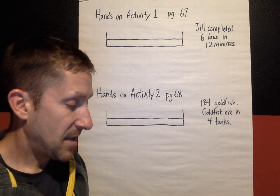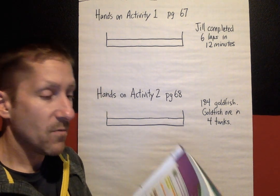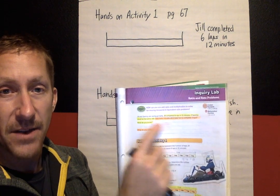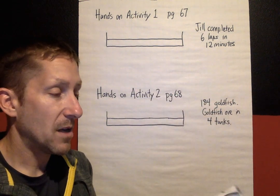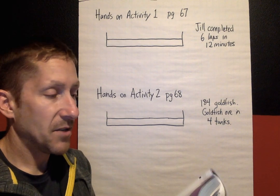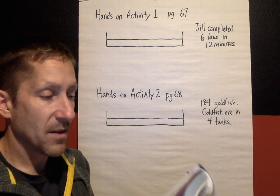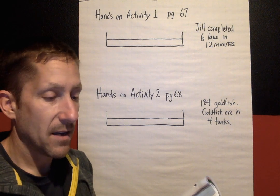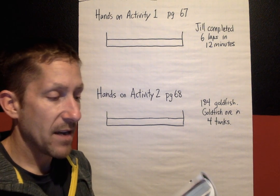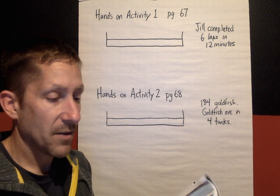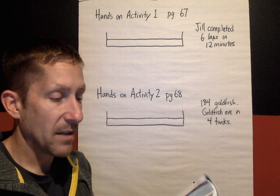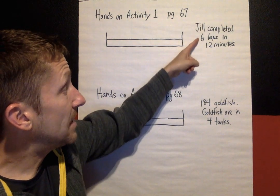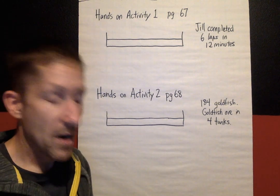So the first question — hands-on activity one, I'm reading right here on page 67. You can follow along in your book. It says: Jill and Sammy are racing go-karts. Jill completed six laps in 12 minutes. If Sammy raced at the same rate, how many minutes did it take her to complete three laps? So what we know is that Jill completed six laps in 12 minutes.